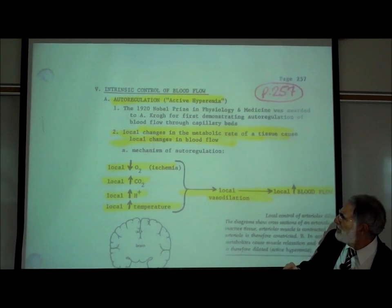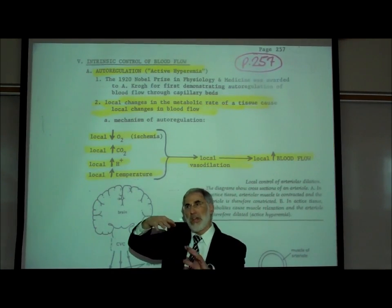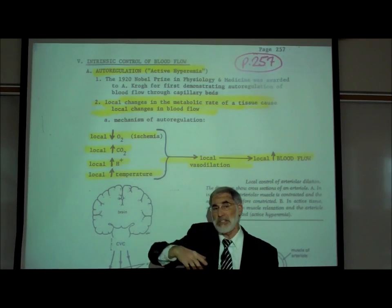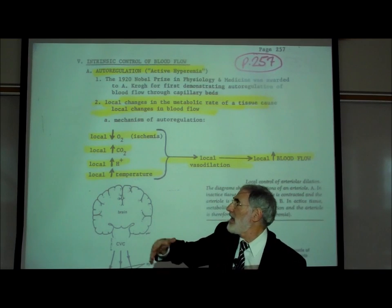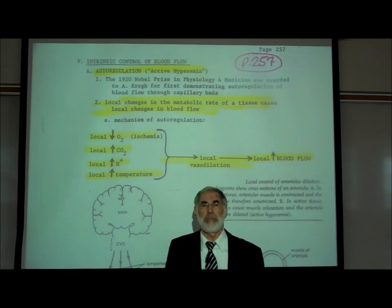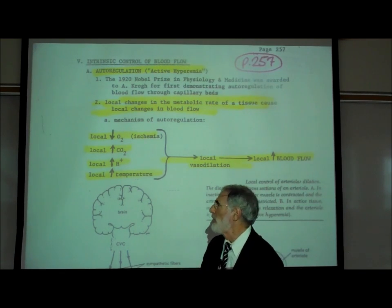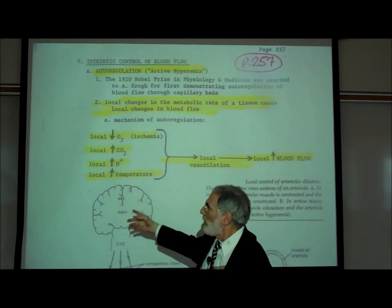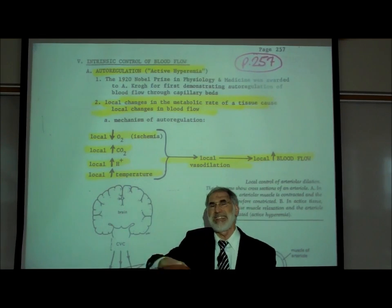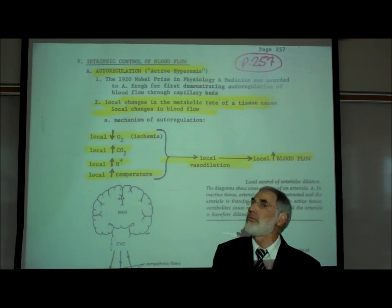So basically, here's how this works. Any time there is a decrease in oxygen to a tissue known as ischemia, or any time there's an increase in carbon dioxide level at the tissue level, or any time there's an increase in acidity at a tissue level, or any time there's an increase in temperature where the temperature of that tissue rises.